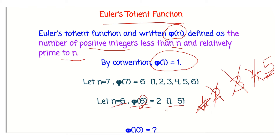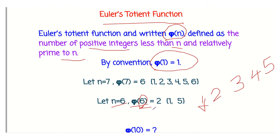Therefore, φ(6) equals the number of positive integers less than 6 and relatively prime to 6, which gives us φ(6) = 2. Now let us calculate φ(7).